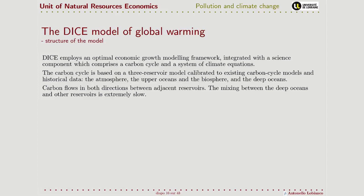Compared to the model we saw, the DICE model has a biophysical part expressed in more explicit form. In particular, what is important is the presence of different reservoirs of carbon: the atmosphere, where we want to reduce carbon concentration; the upper oceans and the biosphere together, where the exchange is very high between them; and then the deep oceans, where exchange of carbon with the atmosphere and upper oceans is much more limited.